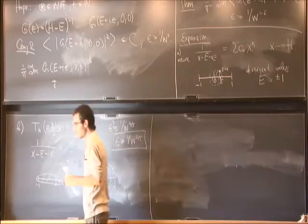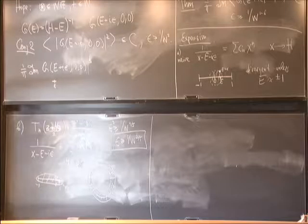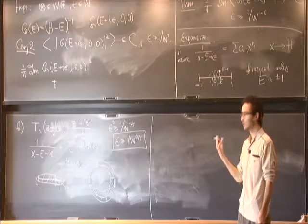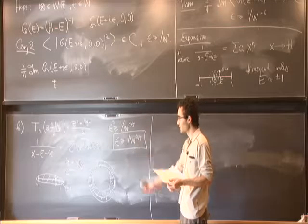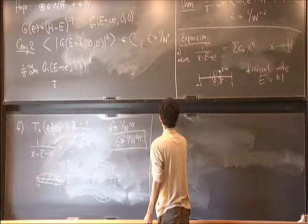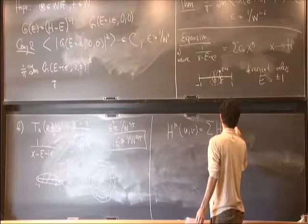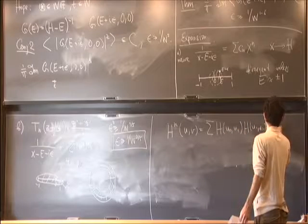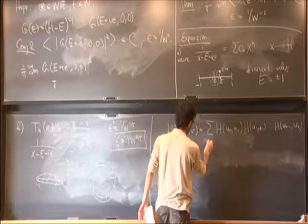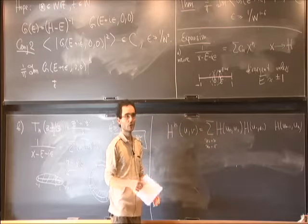Before proceeding, let me explain why it's easy to compute moments. The nth power of H at (u,v) is the sum of products H(u_0, u_1) H(u_1, u_2) ... H(u_{n-1}, u_n) over all paths — (n+1)-tuples u_0 to u_n with u_0=u and u_n=v. This is a nice combinatorial object. Now define a matrix H^{[n]}, whose (u,v) element is the same sum but restricted to non-backtracking paths, meaning u_j is not equal to u_{j+2}.